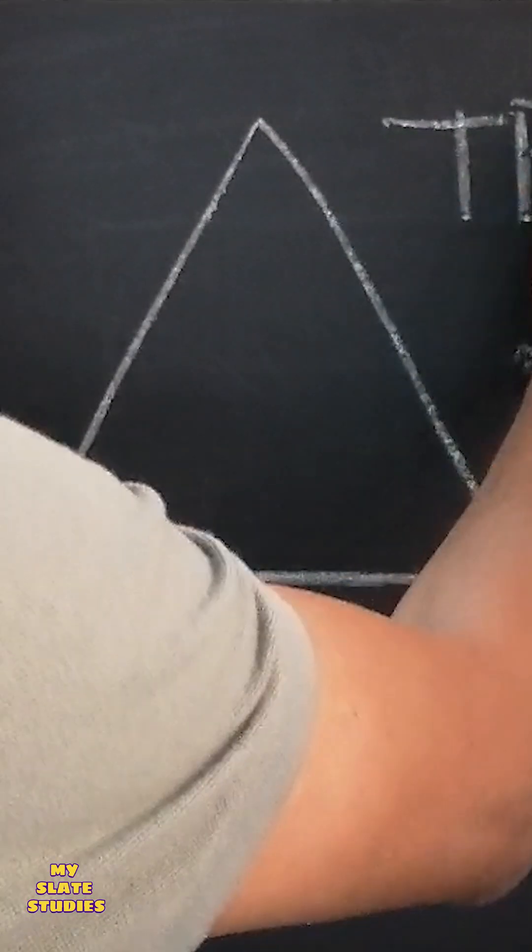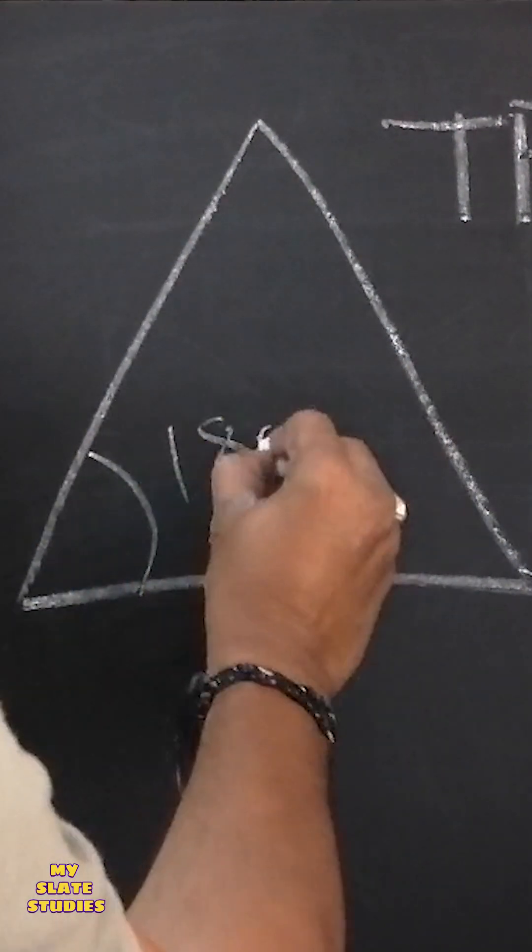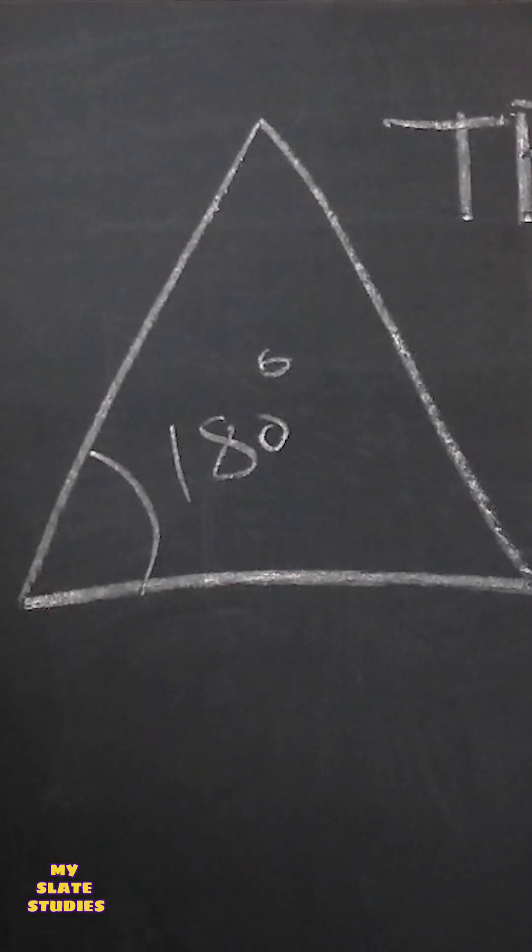Now, the triangle. It's a three-sided polygon with angles that always add up to 180 degrees.